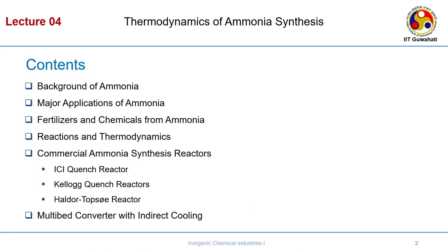In this lecture I will cover the background of ammonia and why ammonia production is very important today. Then the applications of ammonia — ranging from fertilizers to chemicals to intermediates. We will also look at urea production, which requires ammonia as feedstock reacted with carbon dioxide. Then we will go to the reactions and thermodynamics of ammonia synthesis, and finally we will see some commercial ammonia synthesis reactors: ICI with their quench reactor, Kellogg's quench reactors, and Haldor Topsoe.